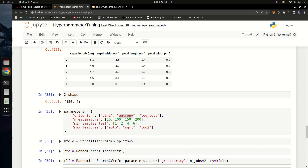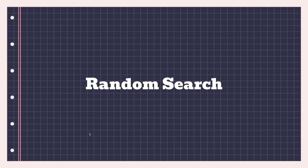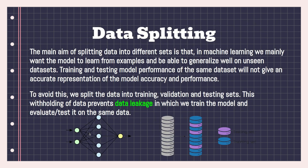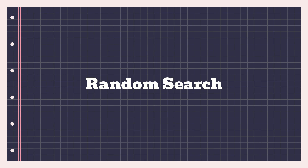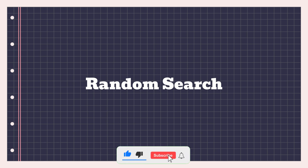That's basically how you can perform hyperparameter tuning in machine learning using grid search and random search. If you enjoyed this video, give it a thumbs up, leave a comment below, and share it with anyone who might find it helpful. If you're not subscribed, please consider subscribing. If you want me to make any other machine learning videos, leave a comment below. Thanks for watching and see you in the next one!